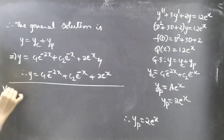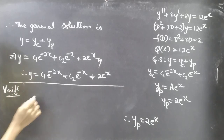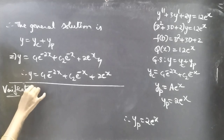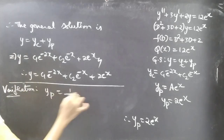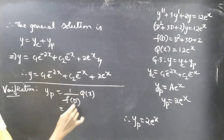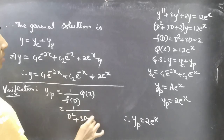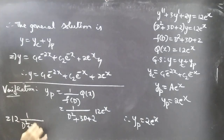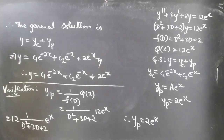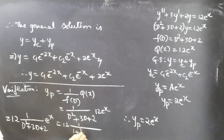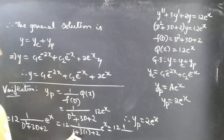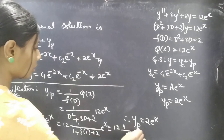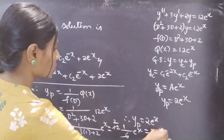Let's verify yp using the operator method: yp = (1/f(D))·Q(x) = 12·(1/(D² + 3D + 2))·e^x. For D = 1: 1² + 3(1) + 2 = 6, which is non-zero. Replacing D by 1: yp = 12·(1/6)·e^x = 2e^x. Our yp is confirmed correct.